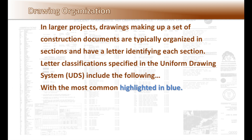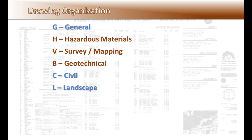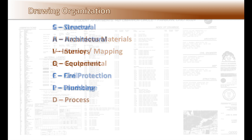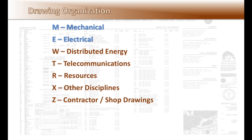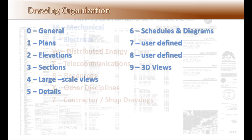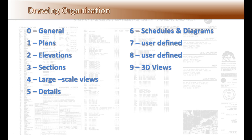The most common are highlighted in blue: G for general, C for civil, L for landscaping, S for structural, A for architectural, F for fire protection, P for plumbing, M for mechanical, and E for electrical. Each section is then further divided using numbers: zero for general, one for plans, two for elevations, three for sections, and so on, up to nine for 3D views.